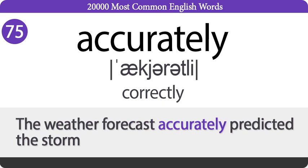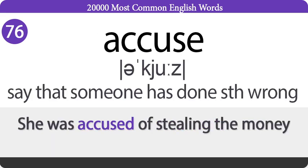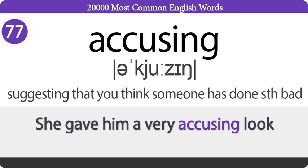Accurately: Correctly. The weather forecast accurately predicted the storm. Accuse: Say that someone has done something wrong. She was accused of stealing the money. Accusing: Suggesting that you think someone has done something bad. She gave him a very accusing look.